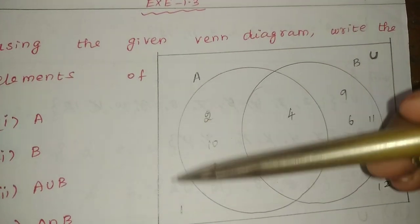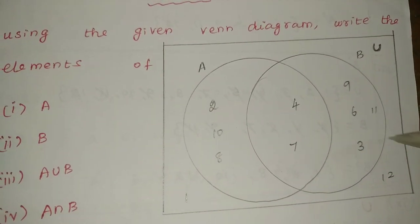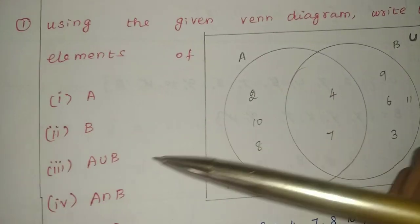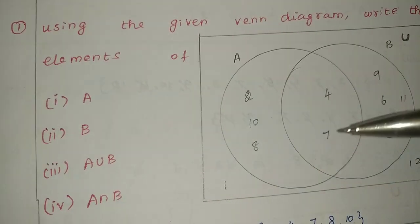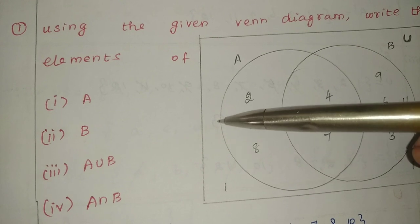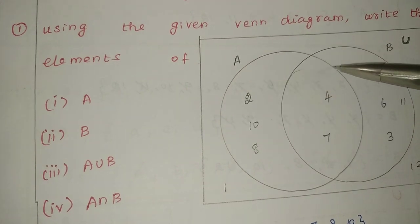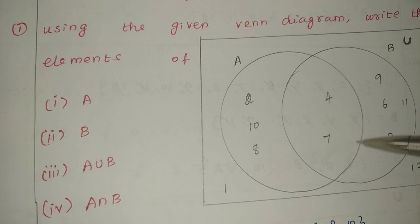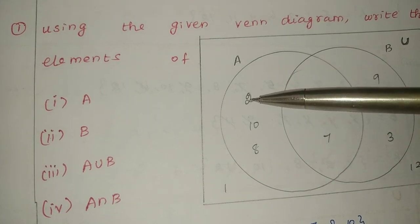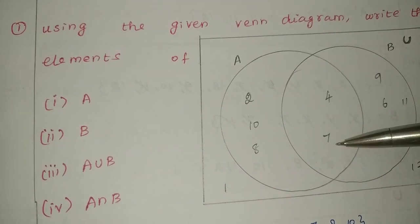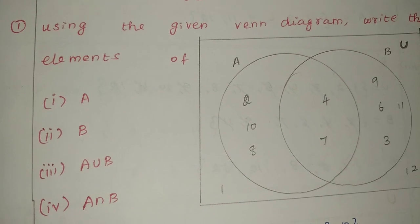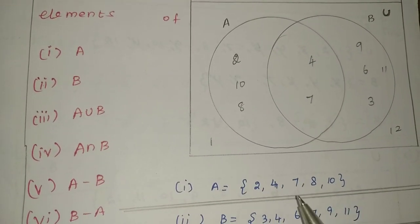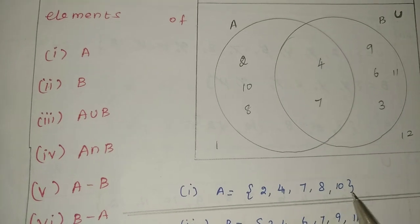So when you get the Venn Diagram, you can get the values. First we get set A — A is the ring. The values of A are: 2, 4, 7, 8, 10. So A is equal to {2, 4, 7, 8, 10}.